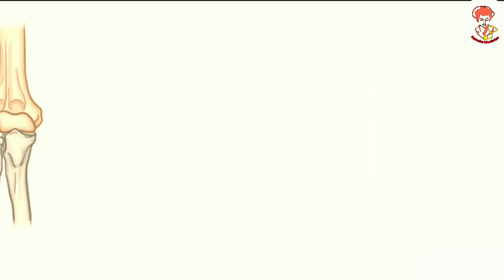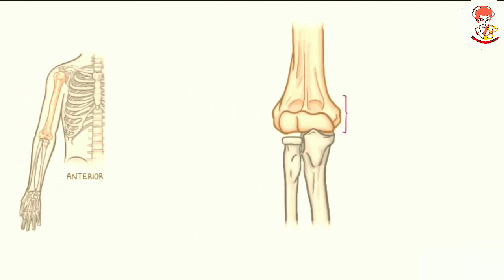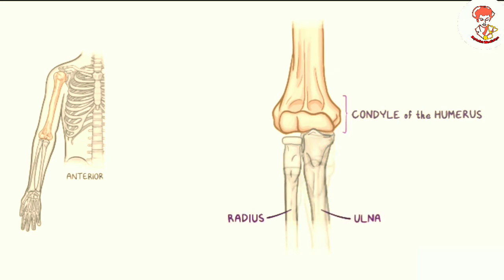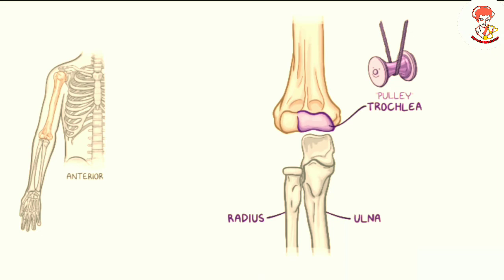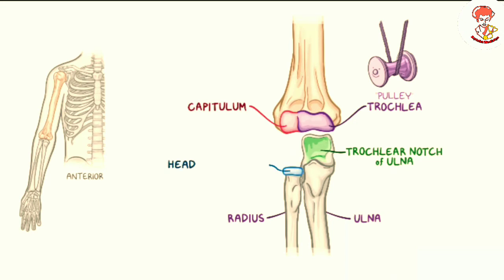Finally, the tip of the distal humerus, referred to as the condyle of the humerus, has two articular surfaces, which makes sense as it articulates with the two bones of the forearm, the radius and ulna. Medially there is the trochlea, which literally translates to 'pulley,' and it really looks like one — the trochlea articulates with the trochlear notch of the ulna. Laterally there is the capitulum, which articulates with the head of the radius, and it literally means 'tiny head' because it looks like a tiny bald head.